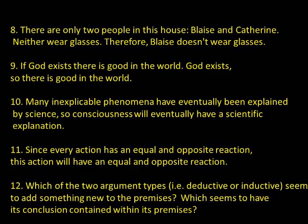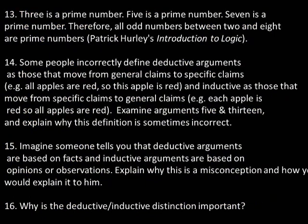Number thirteen is deductive. Notice it moves from particular to general claims — not all deductive arguments move from general to specific. For number fourteen, see numbers thirteen and five as counter-examples. Number fifteen: the answers will vary, but both types of arguments could have all correct facts. Logic is about the quality of inferences, not the truth or falsity of the premises.